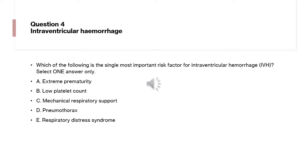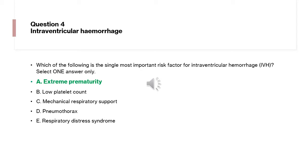Question 4 is regarding intraventricular hemorrhage (IVH). Which of the following is the single most important risk factor for IVH? Options include: extreme prematurity, low platelet count, mechanical respiratory support, pneumothorax, or respiratory distress syndrome. Although all can lead to IVH, the correct answer is extreme prematurity, which is the single most important risk factor.